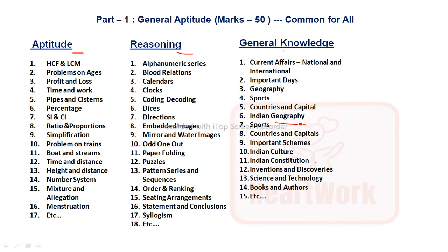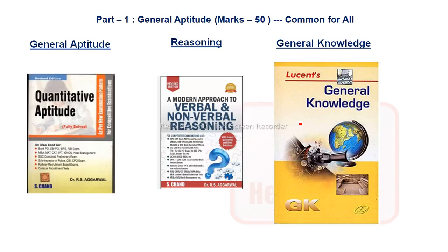In GK, questions on important days, Indian geography, countries and capitals, sports, and Indian Constitution will be asked. For books: for General Aptitude you can consider R.S. Aggarwal's Quantitative Aptitude from Arihant Publication. For reasoning, the same R.S. Aggarwal book from Arihant Publication is recommended. For GK, the Lucent publication book for General Knowledge is a good choice.